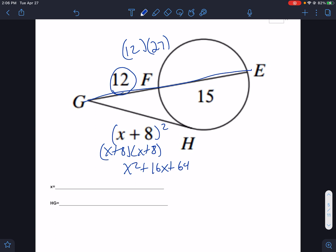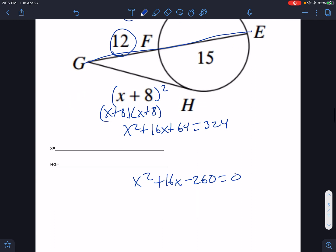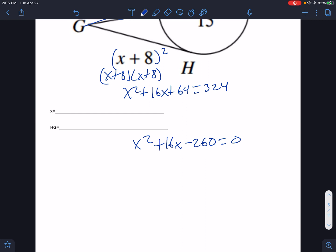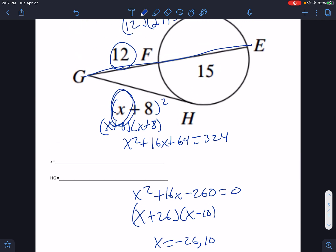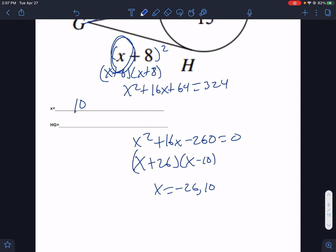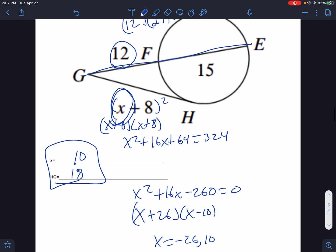27 times 10 is 270, plus 54 is going to be 324. Let me type it in. 12 times 27, 324. So that's going to be 324. So this equals 324. Subtract the 324 over 64 minus 324, and I get x squared plus 16x minus 260. Remember, I said if you have big numbers, try the most obvious. And the most obvious one here is 26 times 10, and that's the one that works. It's going to be plus 26 and minus 10. So x equals negative 26 or positive 10. Now, if I plug in negative 26, that's bad news. That's not going to work. So it's got to be positive 10, which means HG would have to be 18. 10 plus 8 is 18.